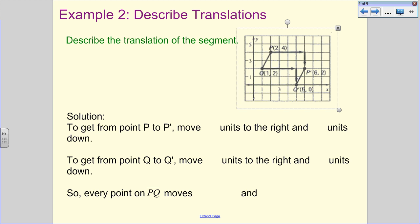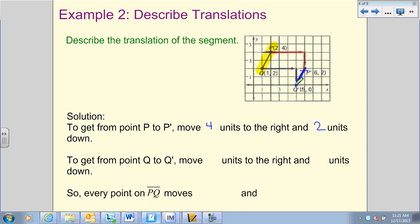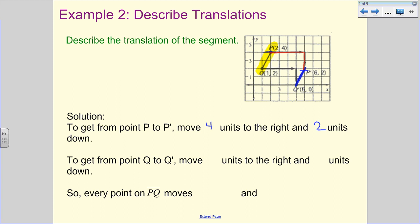So now what we need to do is describe the translation of the segment. We're looking at the segment PQ. We want to know how did it move to become this. So we're looking at what point P does. To move from P to P prime, we had to move our object. We had to move four units to the right. So if we look, we went one, two, three, four points to the right. And then we went two units down. So we went down one, two.